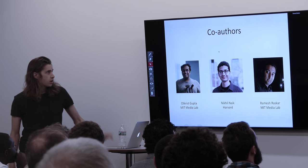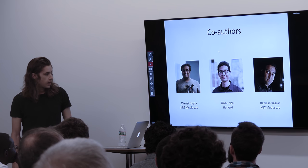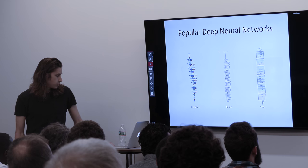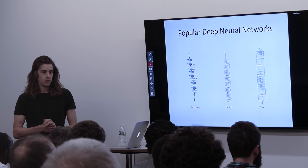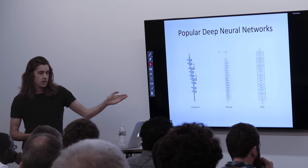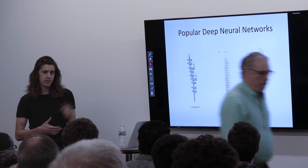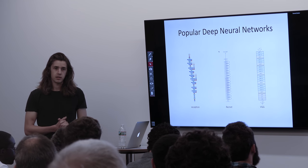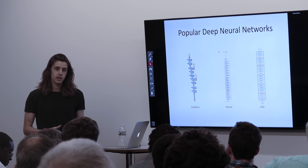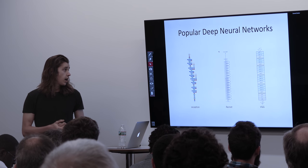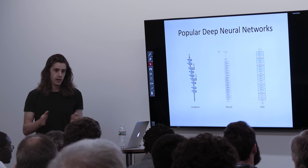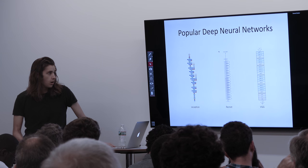First I want to thank my co-authors. Ramesh Raskar is the head of our lab, and Nicol and Utchrist were also two collaborators. If you have any background in neural networks, you've probably seen one of these three before: VGG, ResNet, and Inception. These are models that have come about over the years through the ImageNet classification challenge, where you have a large dataset of about a million images and a thousand different classes.